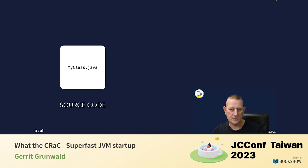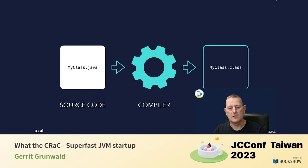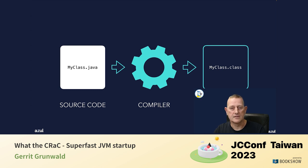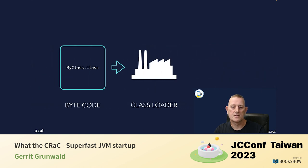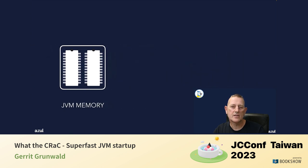We start with a Java source code file, which goes into the Java compiler (javac) and it produces a bytecode class file. This bytecode is cross-platform — if you have a JVM on your system, you can load this class file and it will compile into the native machine code of that system. Once we have this class file, it gets into the class loader, which loads it into JVM memory.